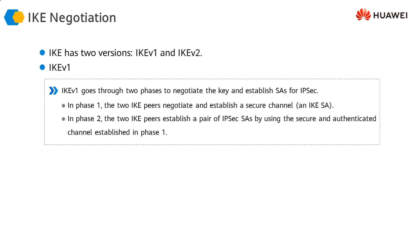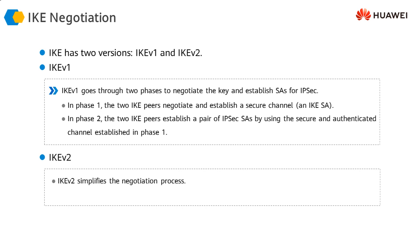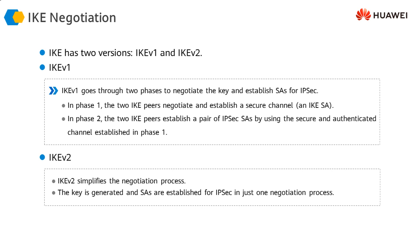Phase two uses the secure and authenticated channel established in phase one. In phase one, an IKE security association is developed and a secure channel is established between the two peers. Once this secure channel is established, it is used to establish an IPsec SA. Phase two is therefore dependent upon phase one. In IKEv2, these two phases are eliminated — the negotiation process is simplified and IPsec security associations are established in just one negotiation process.